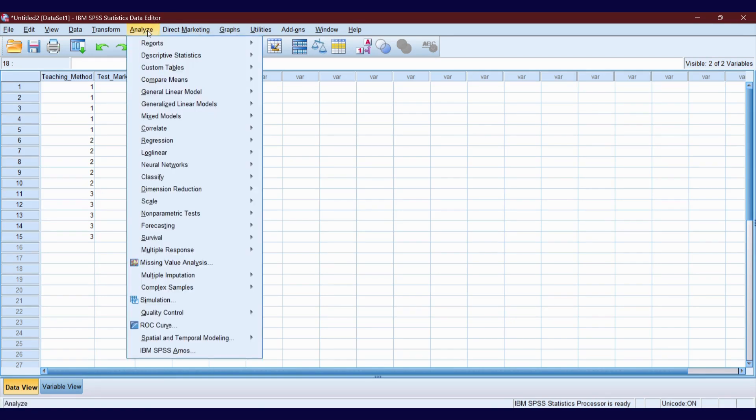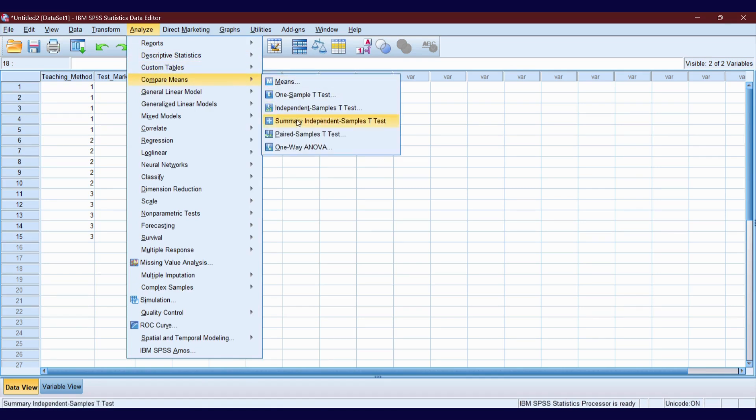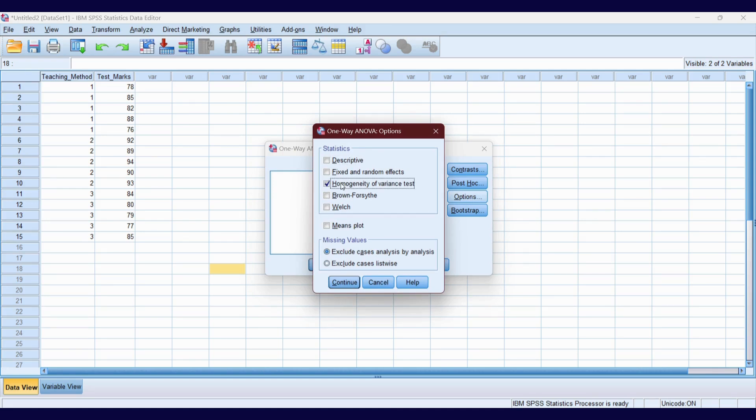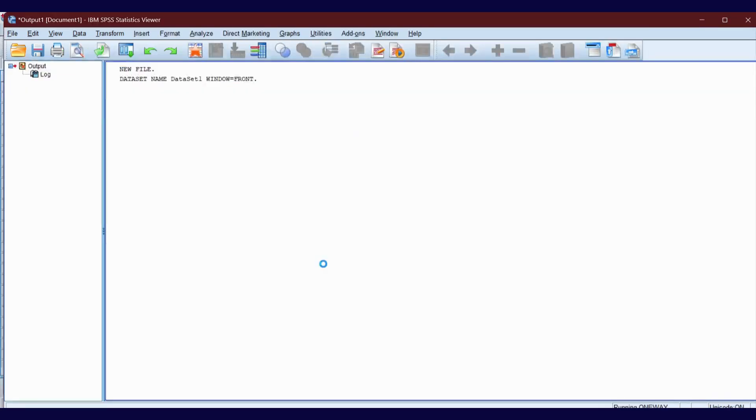Go to Analyze, click Compare Means and One-Way ANOVA, and put our test marks into the dependent list and teaching method into the factor box. Click Options, tick homogeneity of variance test, click Continue, and click OK.